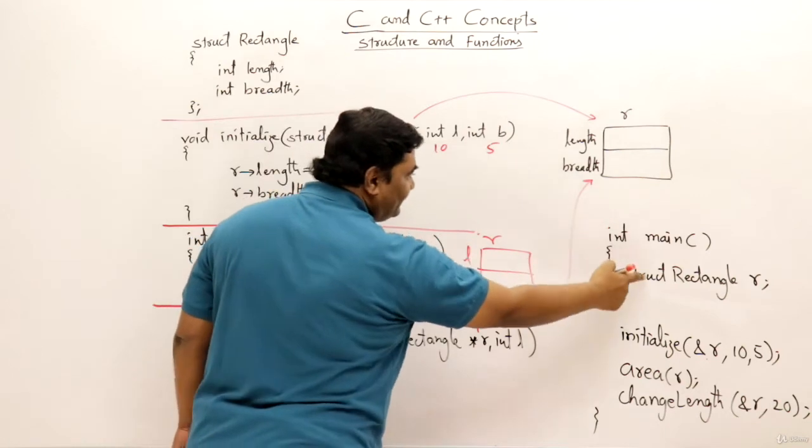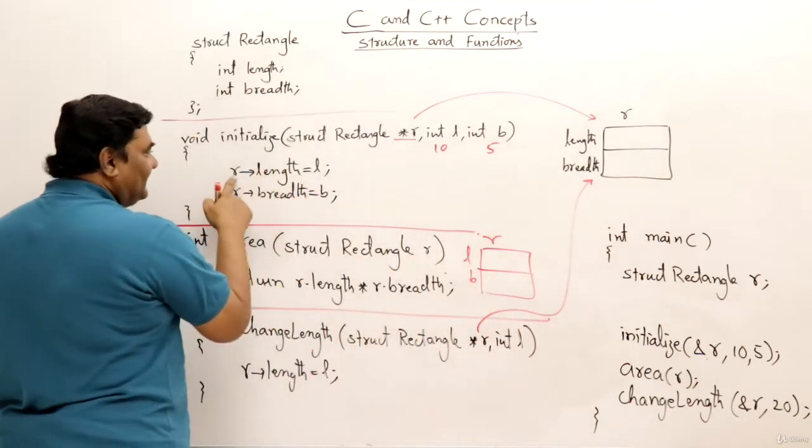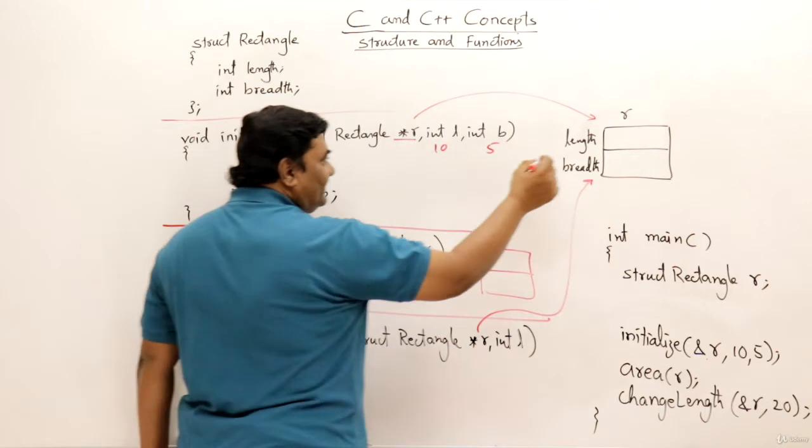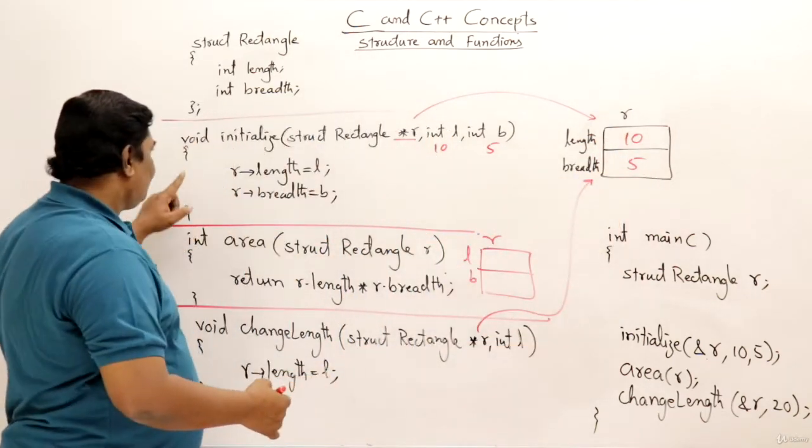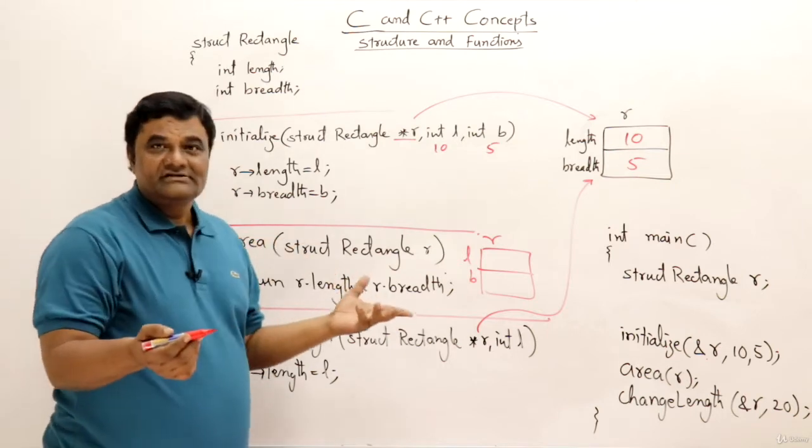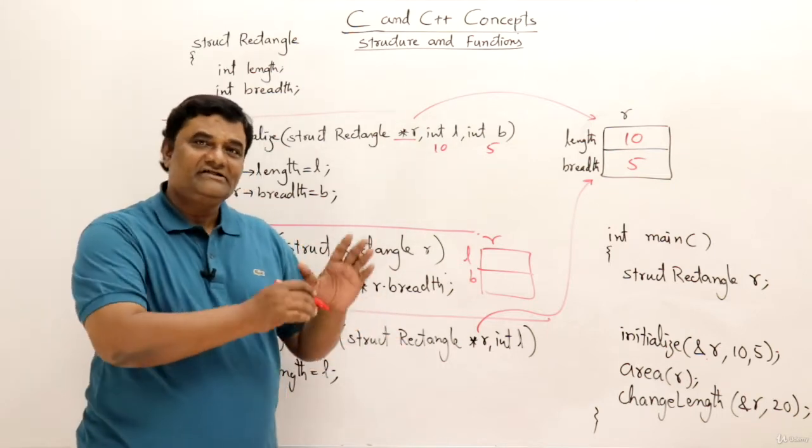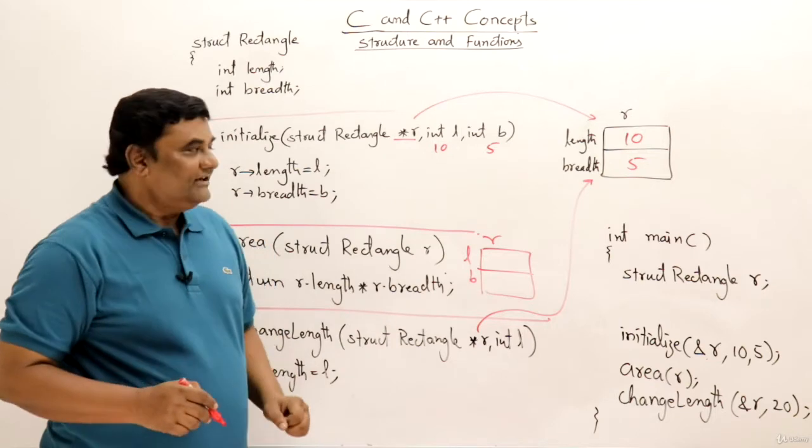And this is a pointer to that rectangle that belongs to main function. And r arrow length assigned l and breadth assigned b. So this will be 10 and 5 and the function returns. It is not returning anything because it doesn't have to return anything, it is just initializing those values.